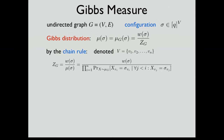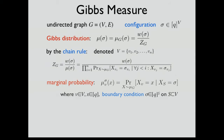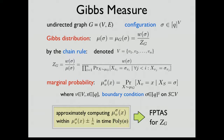Marginal probabilities play a key role in approximate counting. By the chain rule, the partition function can be decomposed as a product of marginal probabilities. If we can approximately compute this marginal probability with arbitrary conditioning within an additive error efficiently, then we have an FPTAS for the partition function. So from now on, we focus on approximating marginal probabilities.